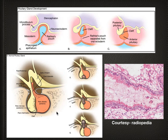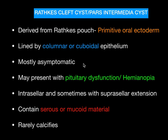It can be either sellar, suprasellar, or at the junction of the sellar and suprasellar regions. It is derived from Rathke's pouch as we have seen. It is lined by columnar or cuboidal epithelium, which is very important — when the cyst is excised and sent for histopathology, the presence of this columnar epithelium is a classic feature of Rathke's cleft cyst.